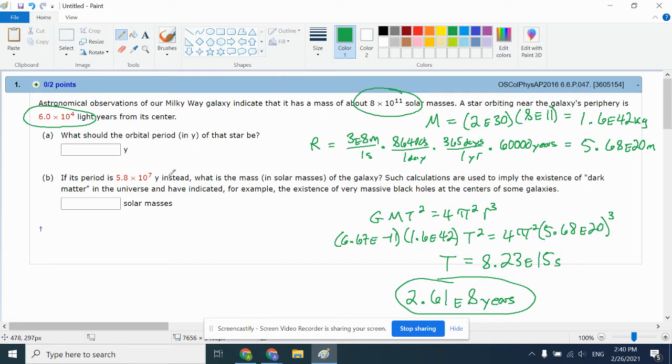Now it says instead it actually only takes 58 million years. So what is the mass of the galaxy? And we talked about, well, this is the evidence of why there's dark matter, because the stars are moving way too fast. So what we're going to do instead is run the GMT squared equals 4 pi R cubed equation. G still stays 6.67E-11. We're now solving for mass. Our goal is to figure out what the mass is and convert it to solar masses.